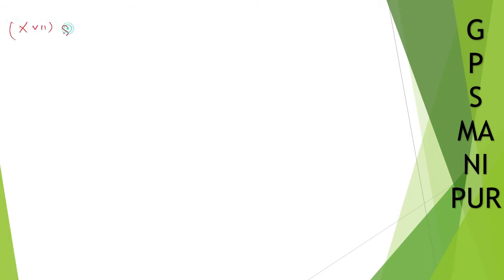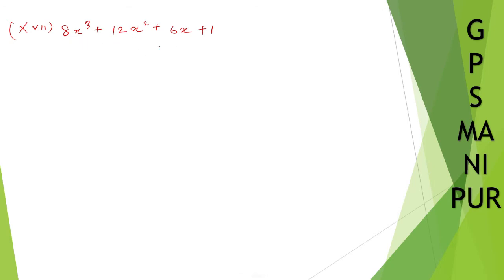Now let us do Roman number 17: 8x³ plus 12x² plus 6x plus 1. So far we have been dealing with only three terms, but now there are four, so obviously the formula has changed. Let us see what that formula is. This one I can write down as (2x)³.